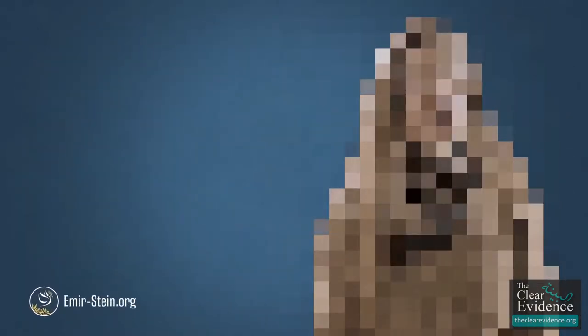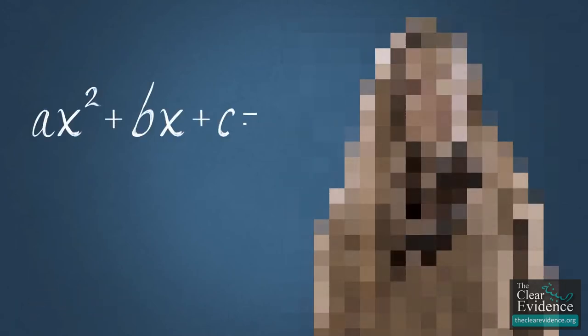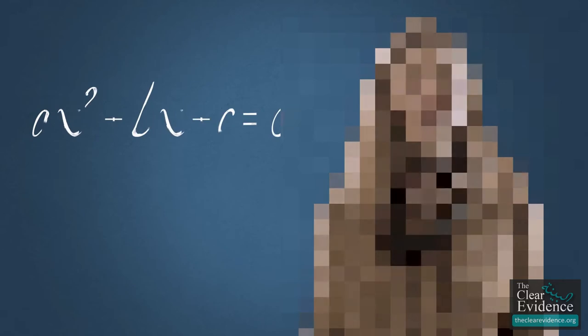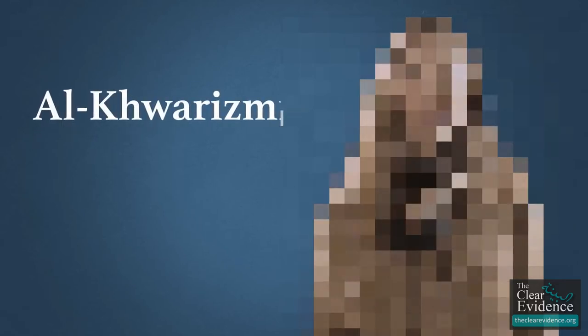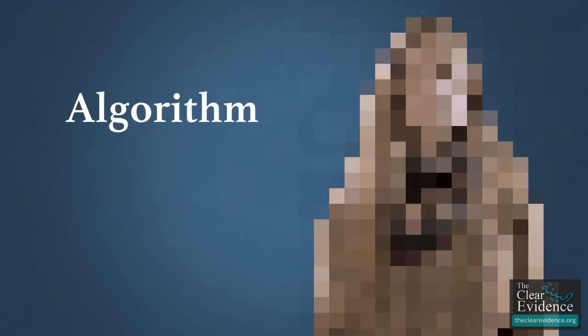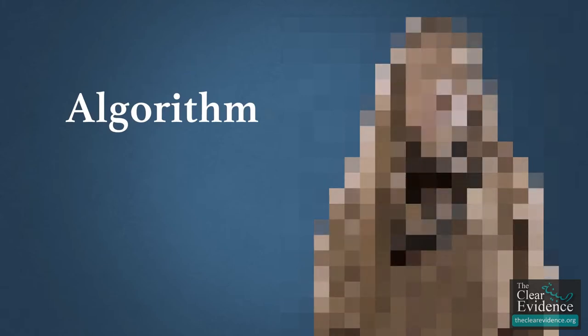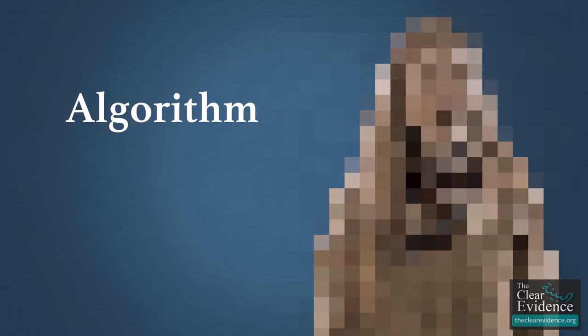Modern algebra comes from a second book by al-Khwarizmi. You can thank him for quadratic equations. Al-Khwarizmi's own name gives us the word algorithm. No computer scientist could function without the word algorithm.